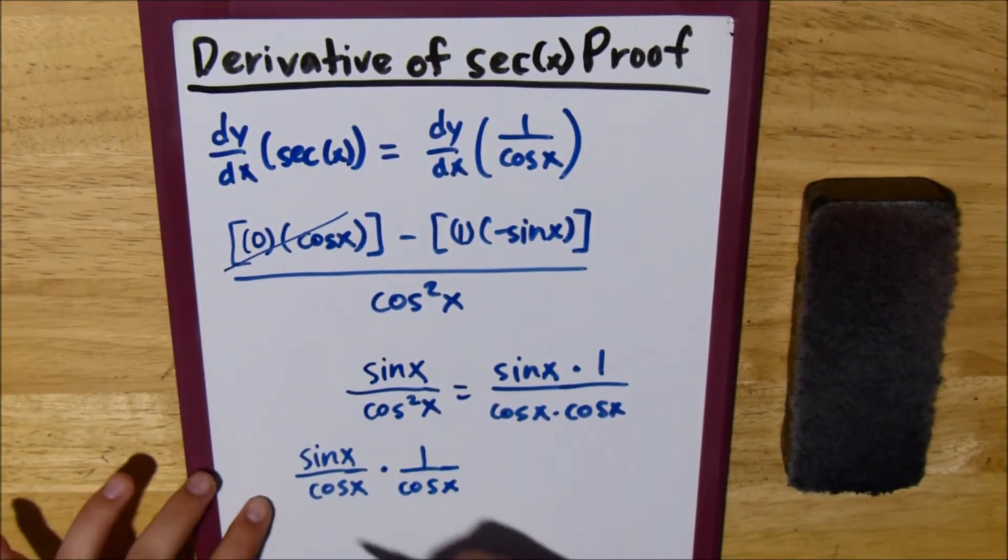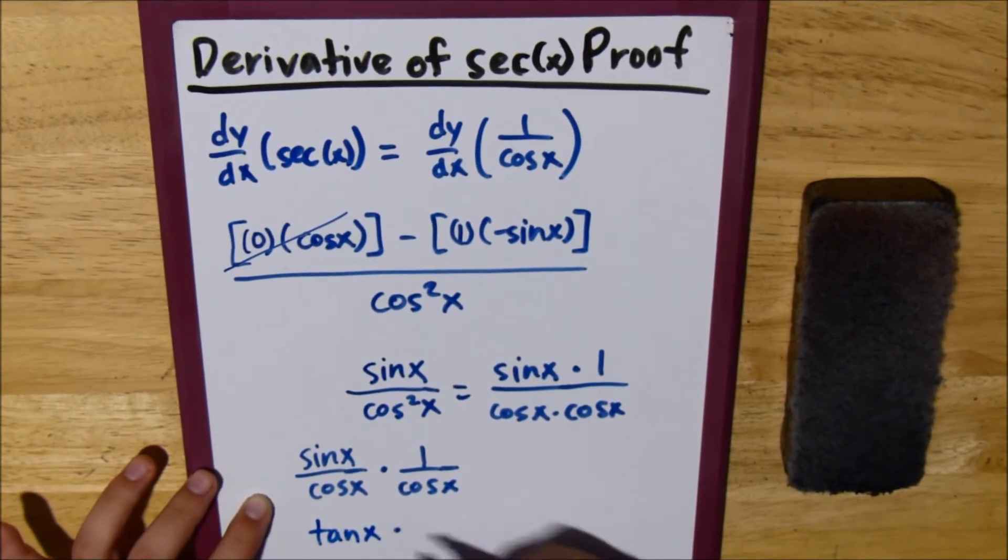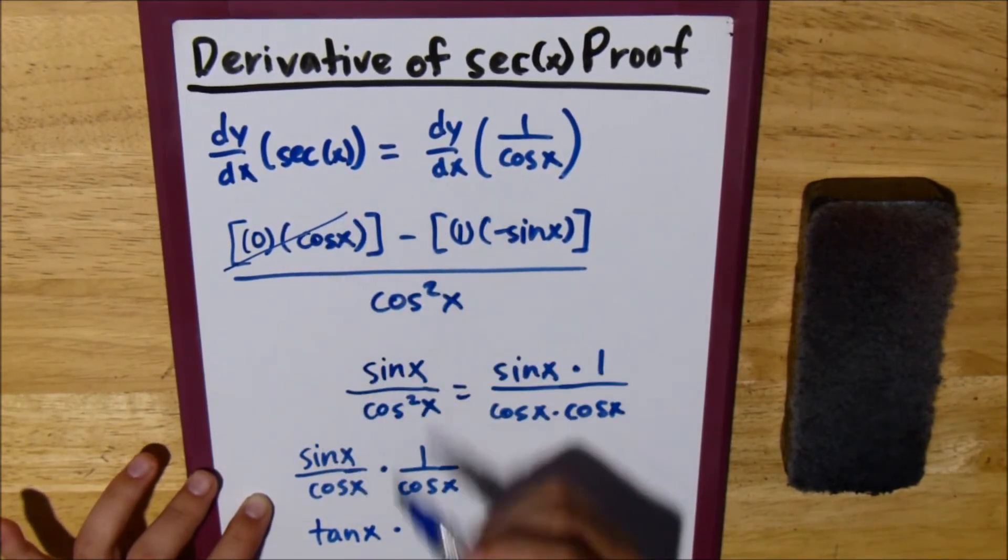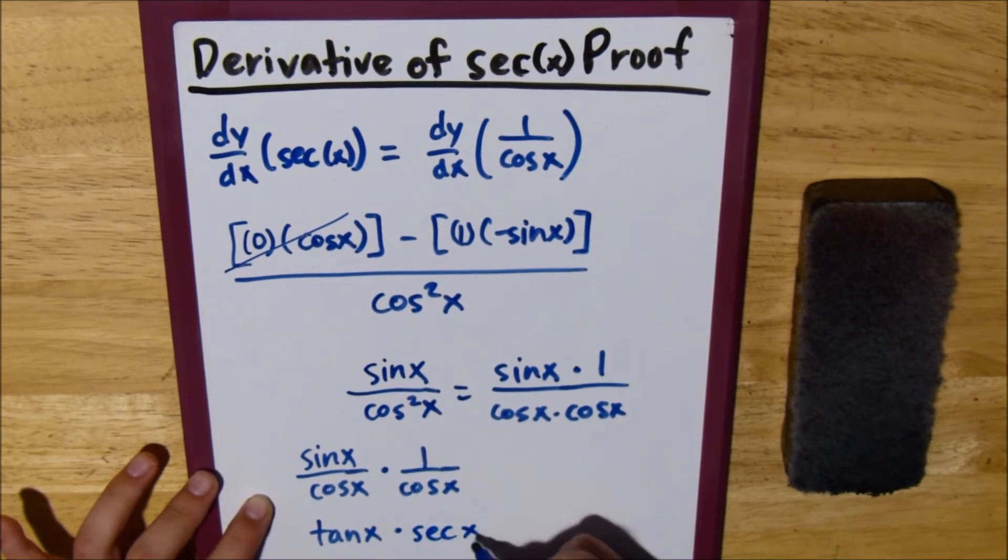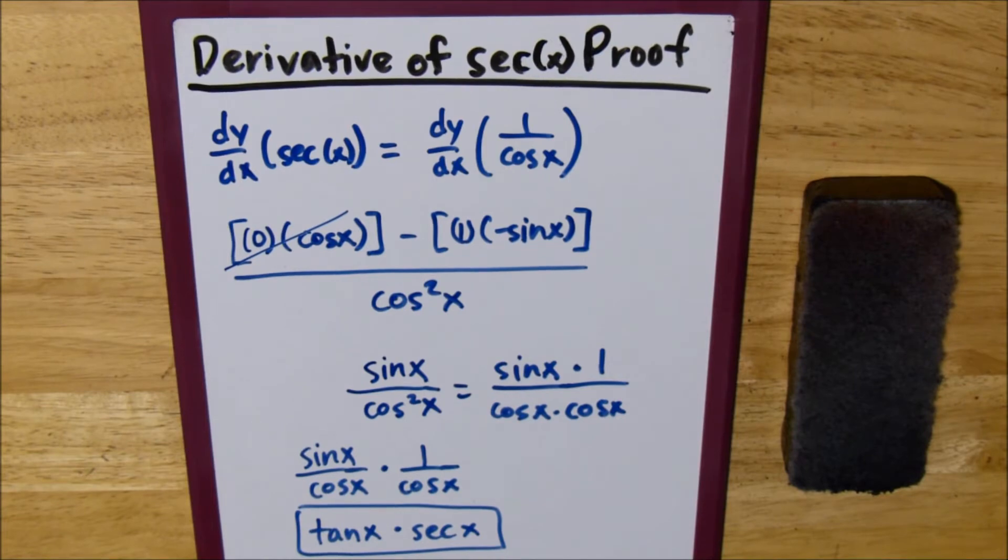Then we can convert these. This one turns to tangent of x, and this one turns to secant of x. That is the derivative of secant of x.